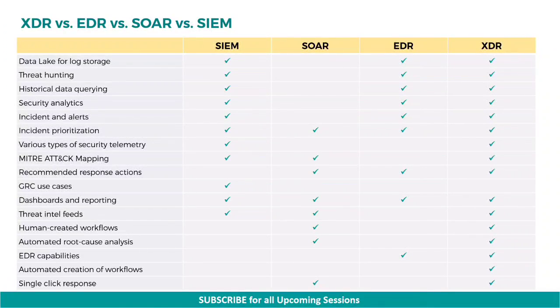Incident prioritization can be done in all four tools. This means assigning severity levels to incidents — that is, critical, high, medium, and low.